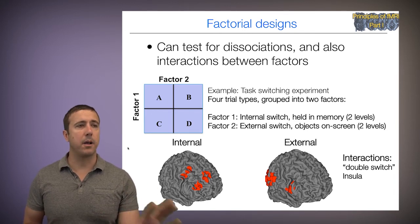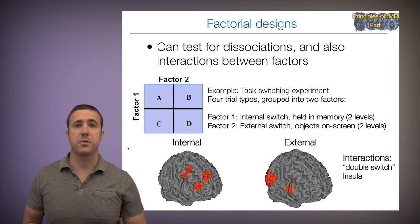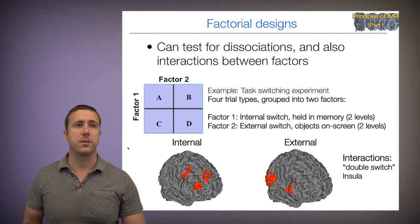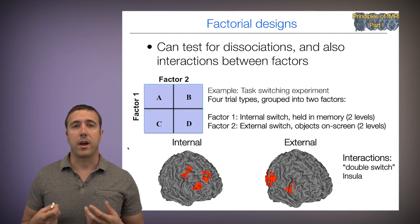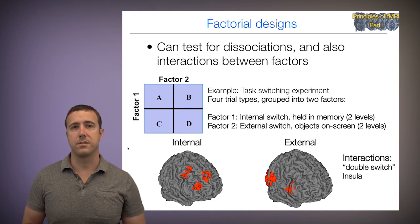The maps show activations for internal task switching in the frontal cortex and external task switching in the frontal cortex and posterior areas. There are also interactions — where something special happens when you have to switch both things at once, something on the screen and something internal — and that occurred in the insula. This is just one example of how we can employ factorial design approaches in brain imaging experiments.